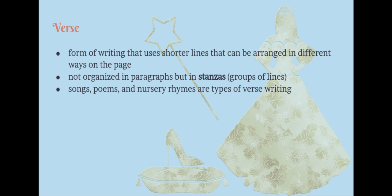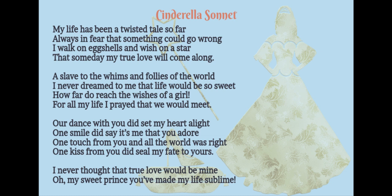So let's read the verse form of Cinderella — the Cinderella Sonnet. "My life has been a twisted tale so far. Always in fear that something could go wrong. I walk on eggshells and wish on a star, that someday my true love will come along. A slave to the whims and follies of the world, I never dreamed that life would be so sweet. How far do reach the wishes of a girl, for all my life I prayed that we would meet. Our dance with you did set my heart alight. One smile did say it's me that you adore. One touch from you and all the world was right. One kiss from you did seal my fate to yours. I never thought that true love would be mine. Oh my sweet prince, you've made my life sublime."